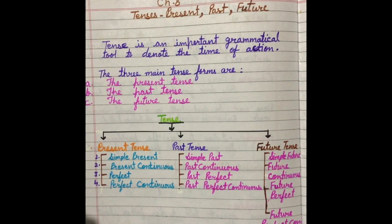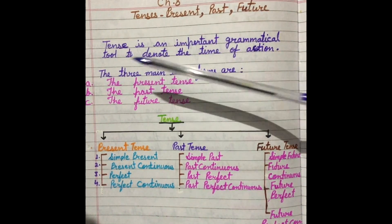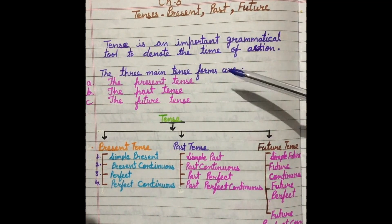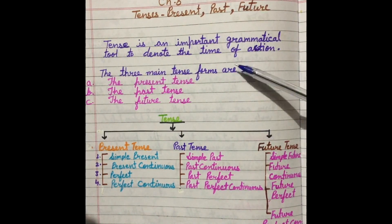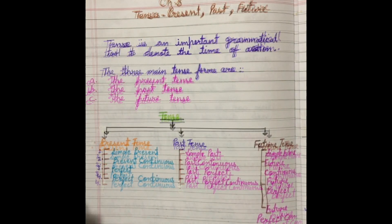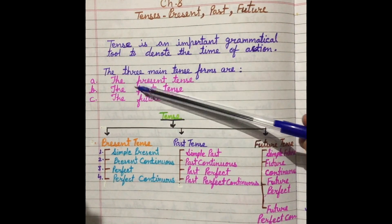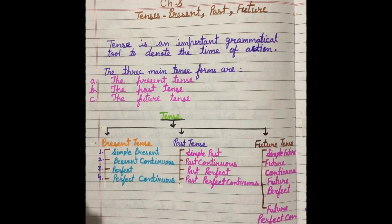First we have to see what is a tense. Tense is an important grammatical tool to denote the time of action. It means the tense is a very important grammatical tool that tells us action time. The three main tense forms are the present tense, the past tense and the future tense.